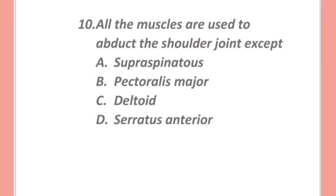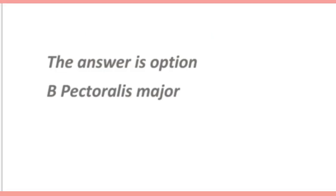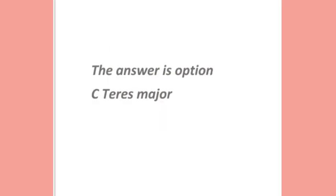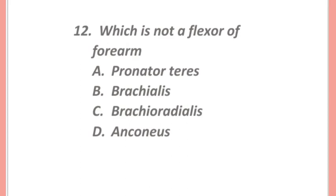All the muscles used to abduct the shoulder joint except: supraspinatus, pectoralis major, deltoid, or serratus anterior? The answer is option B — pectoralis major. The rotator cuff is formed by all except: supraspinatus, infraspinatus, teres major, or teres minor? The answer is option C — teres major.